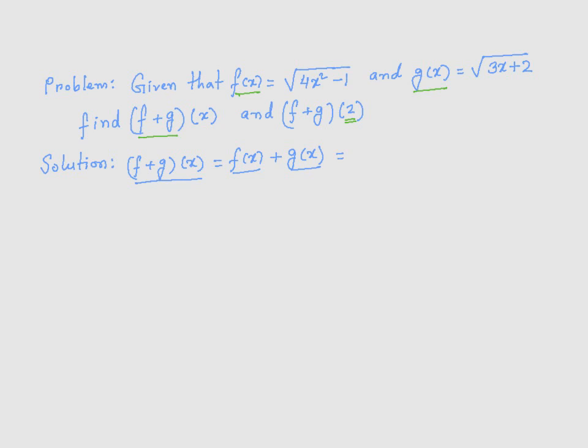Now, f(x) is square root of 4x² - 1 plus g(x) is √(3x+2). So that's my new function, (f+g)(x).